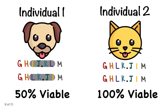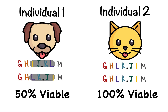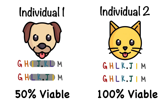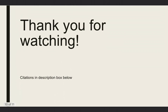Now if we compare individual one with individual two, individual one only had 50% viability because of the pericentric inversion, while individual two has 100% viability, although they both had crossing over occurring. Thank you for watching.